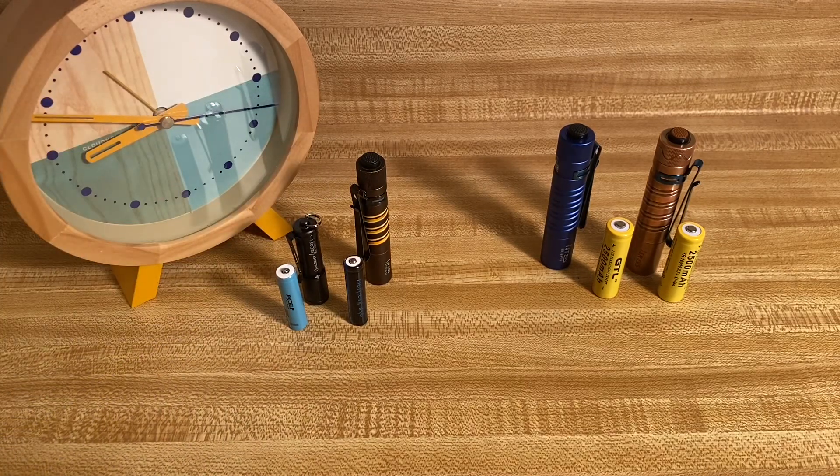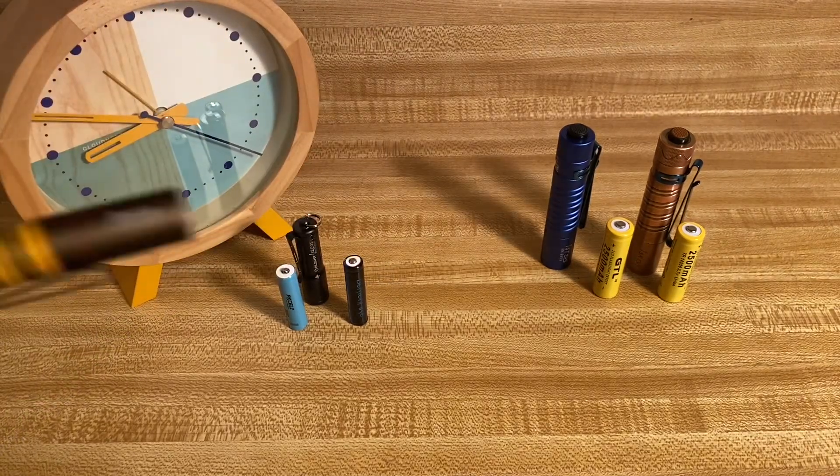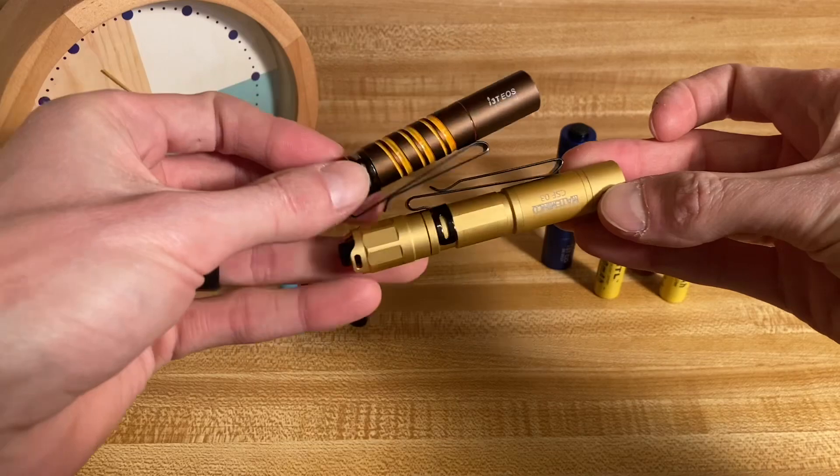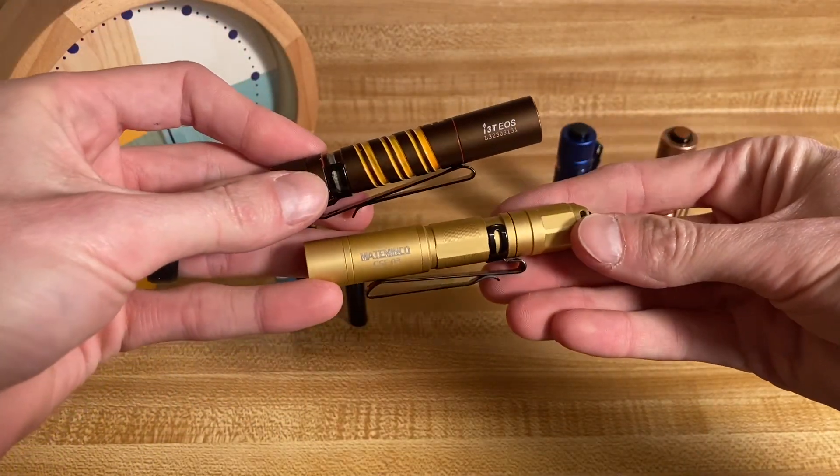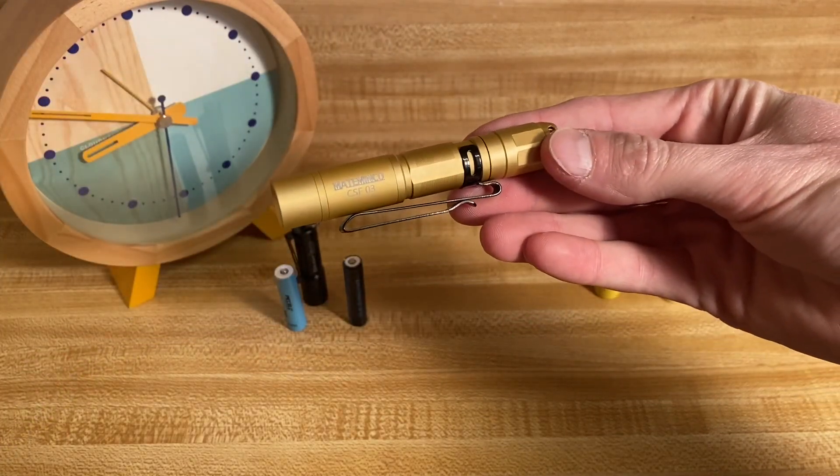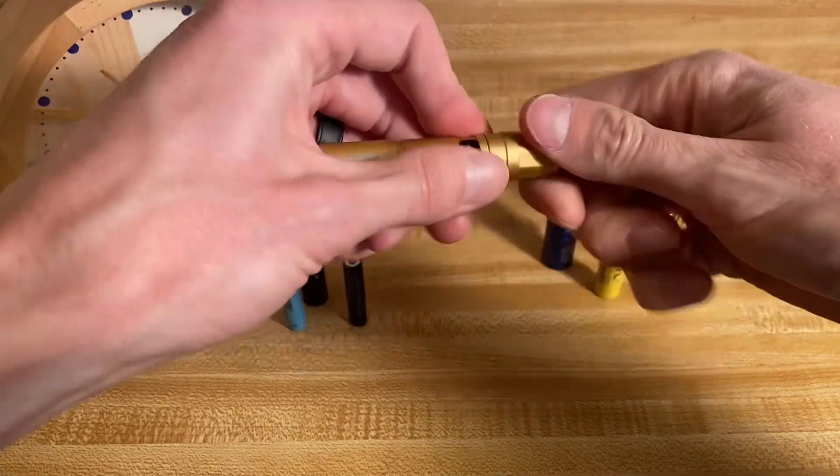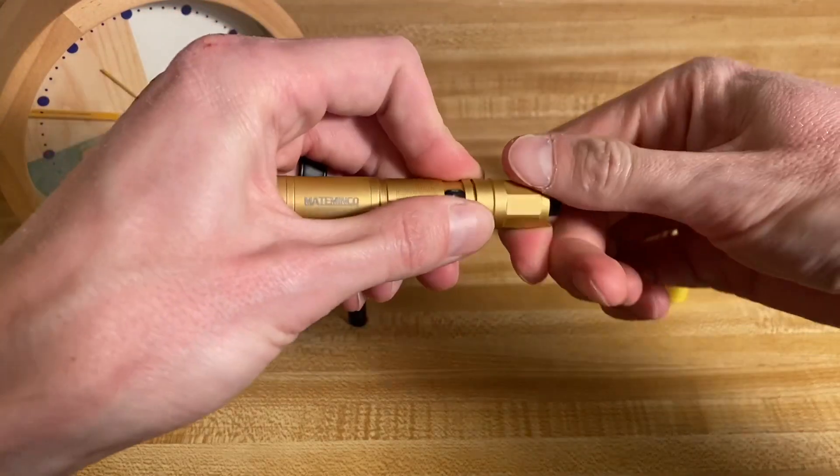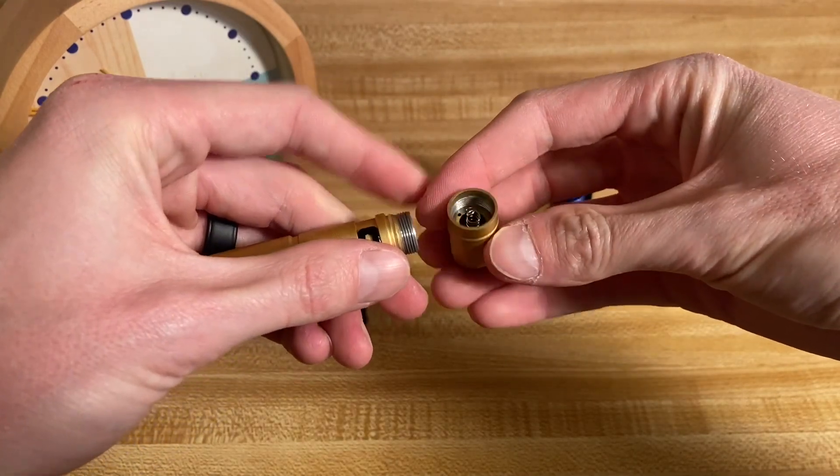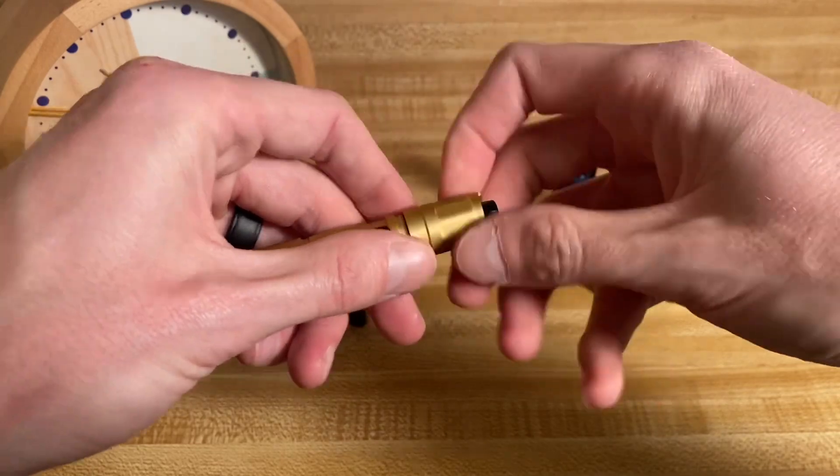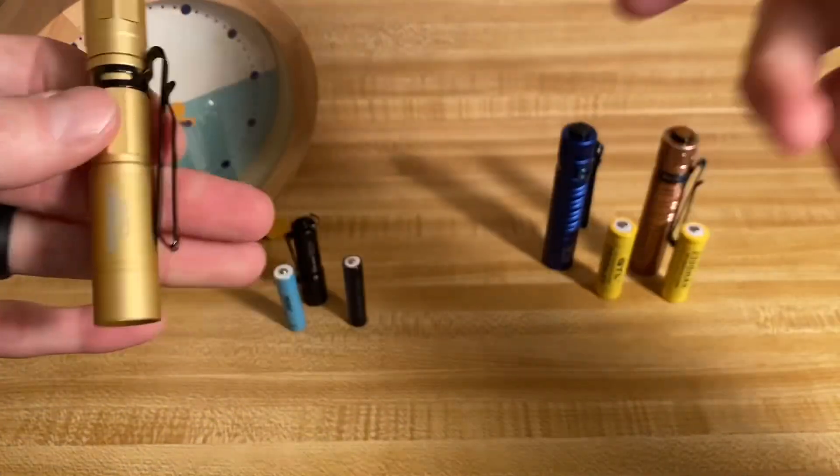By the way, a lot of you were hoping for a video featuring the i3T up against this Mataminko CSF-03. That's the video I wanted to make as well. But unfortunately, this little light tail switch stopped working. No more clicks. So yeah, that video still will be coming. I got a refund and ordered a replacement.